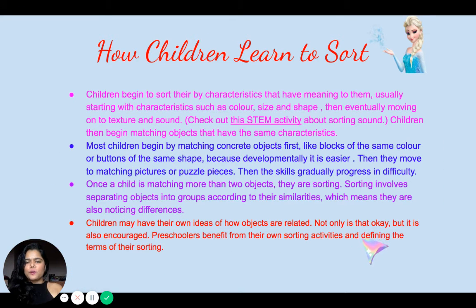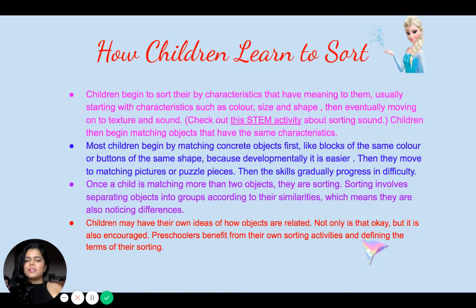How do children learn to sort? Children begin to sort by characteristics that have meaning to them, usually starting with characteristics such as colors, size, and shape, and eventually moving on to texture, sound, and other categories. Children then begin matching objects that have the same characteristics. Most children begin by matching concrete objects first, like blocks of the same color or buttons of the same shape, because they are developmentally easier. Then they move to matching pictures of puzzle pieces.